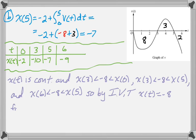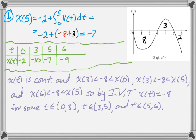So x(t) = -8 for some t between 0 and 3, for some t between 3 and 5, and for some t between 5 and 6. There must be 3 times at which it equals -8. That's how I would do that one.